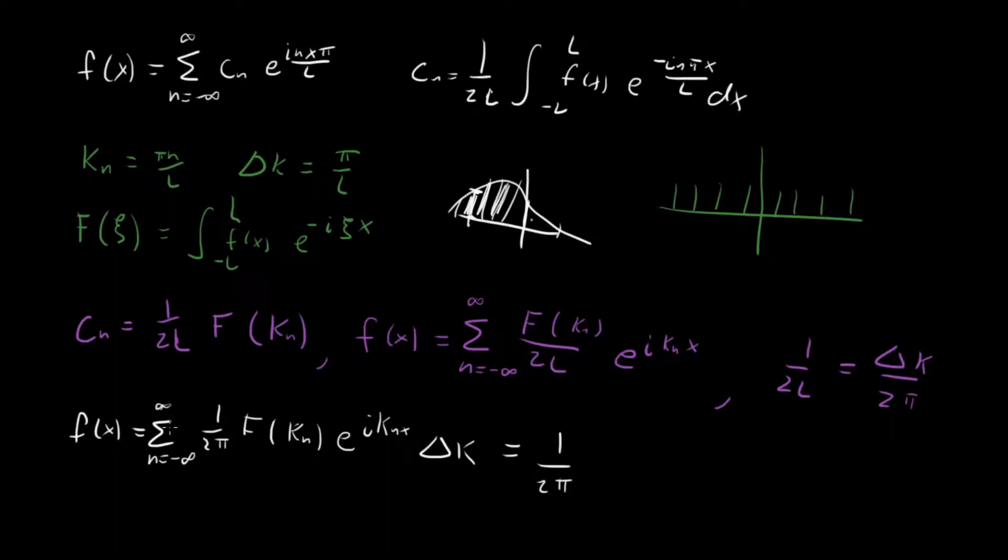Well, we have our 1 over 2pi out in front. But now the sum and this n becomes an integral. So we're going to have some integral. And we're integrating over the entire grid of kns, which goes from minus infinity to infinity. We have f of k. And we have e to the i k x dk. And so we've done it. We've done it by cleverly rerouting our Fourier series so that we get it exactly in terms that make it look like a Riemann sum, such that when l goes to infinity, it looks just like an integral. And in fact, it is an integral.